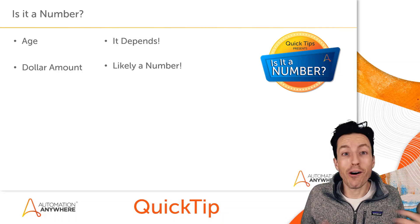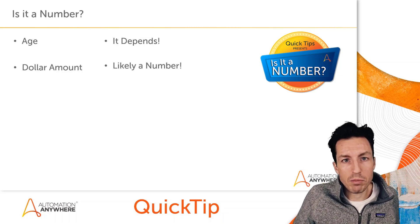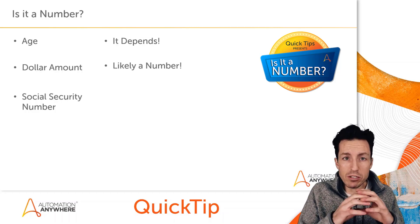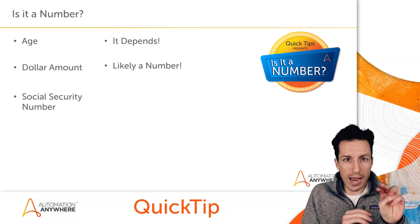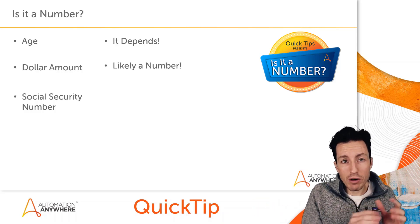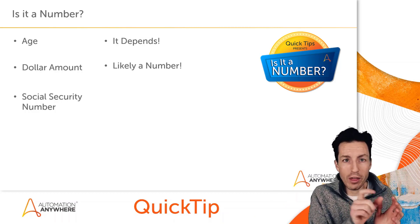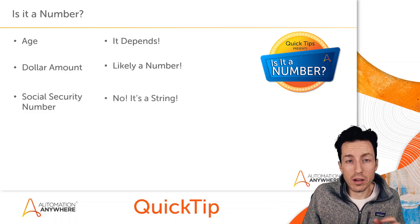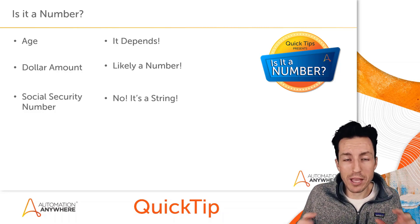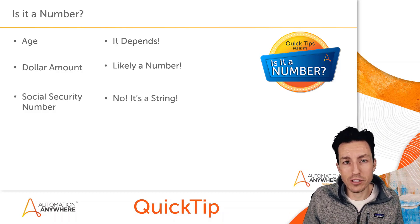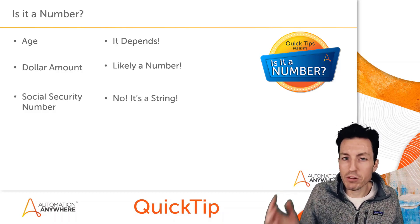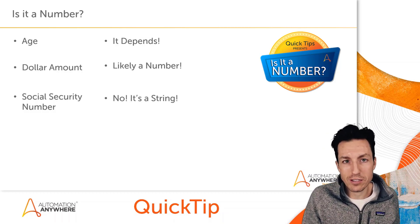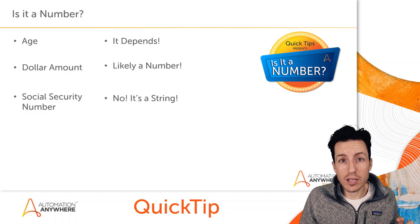The answer for all of these really depends, but let's talk through social security number — this one is a little tricky. It's all numbers, usually formatted as three digits, dash, two digits, dash, four digits. If I tried to convert that directly to a number it would look like subtraction. But the reality is this should always stay as a string. I can't think of any scenario where I need to perform calculations on someone's social security number.